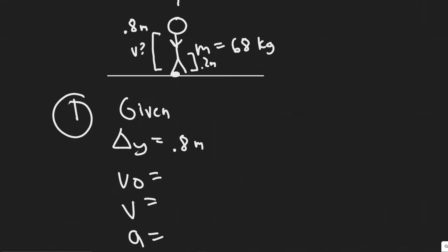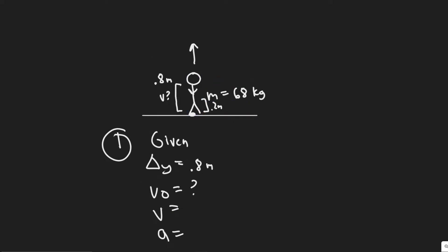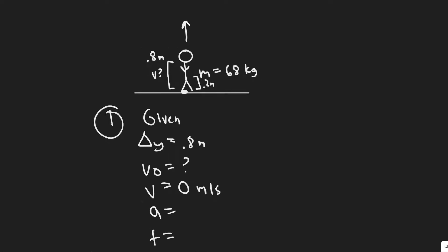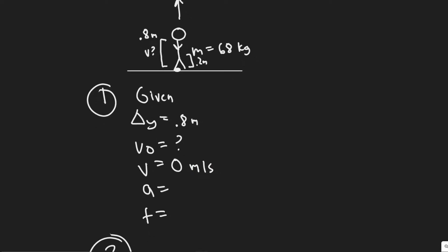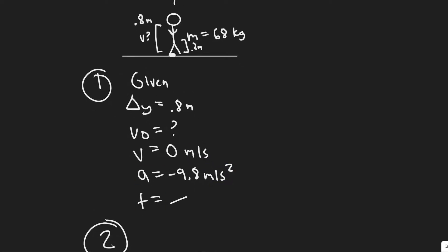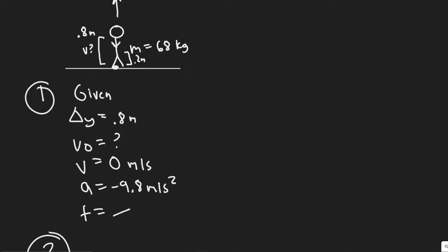Their initial velocity in this interval is what we're trying to find — the velocity they leave the ground with. The final velocity V is set at the end of this interval at their max point, which is 0 meters per second, because when you reach your maximum point, your velocity is always 0. Acceleration is the acceleration due to gravity, which is minus 9.8 meters per second squared — the negative indicates it's downwards. We don't know the time, but we won't need it. Using the kinematic formula: V² = V₀² + 2a·Δy.